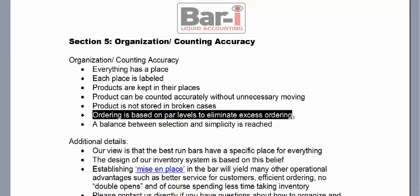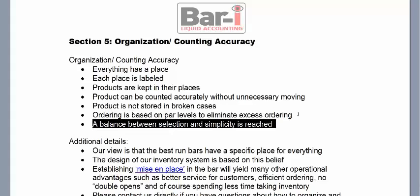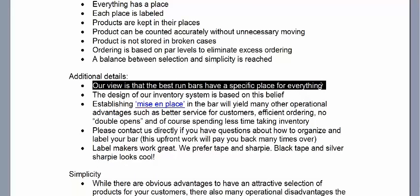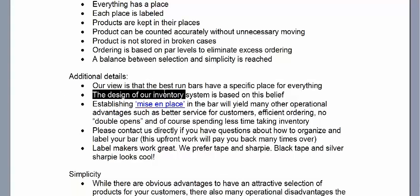Each audit we complete is accompanied by an order guide to help with ordering automation. But if you're ordering just to fill up shelves or out of fear of running out, you're probably over-ordering — and most bars do carry too much product on hand. We recommend having par levels — either using our order guide's par levels or setting your own — so you know what you need to purchase. Decide which products to buy by the case for discounts and which to buy as single bottles. The design of our inventory system is based on the belief that the best-run bars have a specific place for everything.